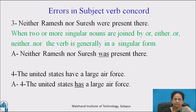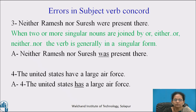See some other examples. 'Neither Ramesh nor Suresh were present there.' In this sentence, Ramesh and Suresh are two subjects. When two or more singular nouns are joined by 'or,' 'either...or,' or 'neither...nor,' the verb is generally in singular form. That's why the correct sentence is: 'Neither Ramesh nor Suresh was present there.'